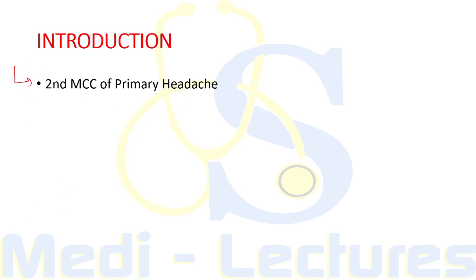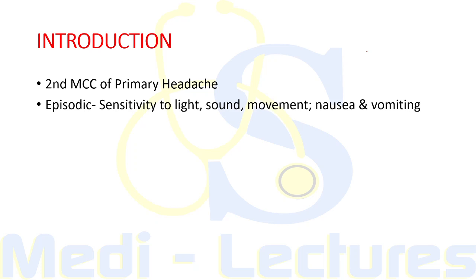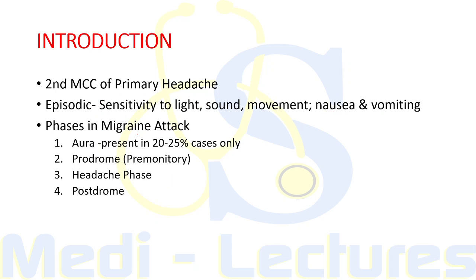Migraine is the second most common cause of primary headache after tension type headache, and it is more common in females compared to males. It is an episodic headache with features like sensitivity to light, sound, and movement, as well as nausea and vomiting. According to phases, migraine can be classical or common — classical migraine, seen in 20 to 25 percent of cases, is associated with four phases, the first being aura.